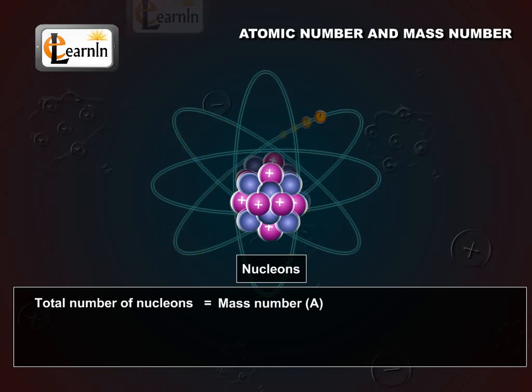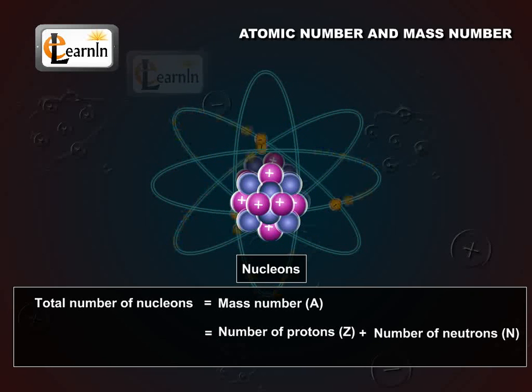Therefore, the mass number of an atom is equal to number of protons, capital Z, plus the number of neutrons, N.